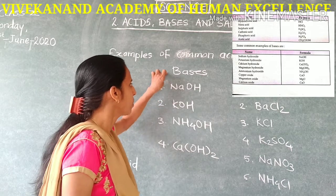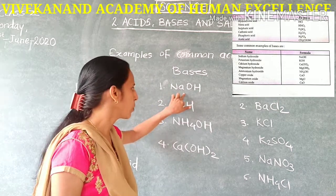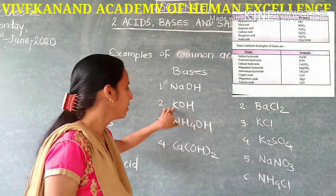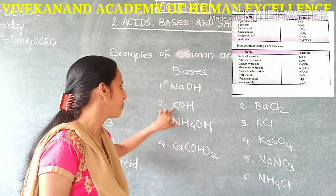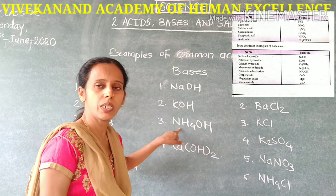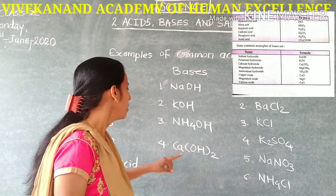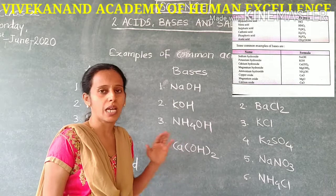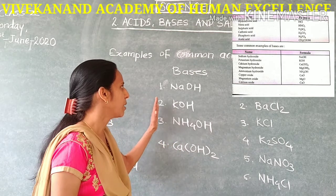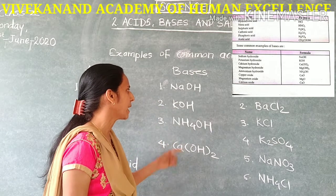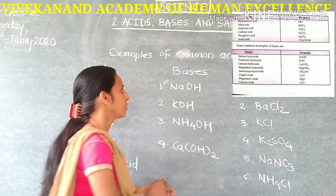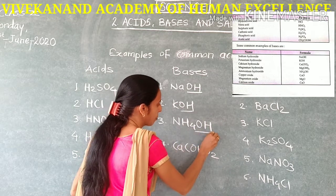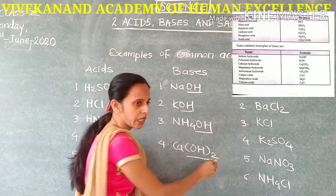Some common examples of bases are caustic soda, that is sodium hydroxide, caustic potassium — potassium hydroxide, formula KOH — ammonium hydroxide, formula NH4OH, and calcium hydroxide, which is also called lime water. Generally, the examples of bases contain OH, that is the hydroxyl group.